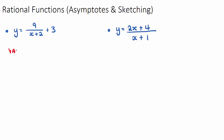To find the vertical asymptote of a rational function, we look at the denominator of the fraction and set it equal to zero. So if we set X plus 2 equal to zero, we get X equals negative 2. The reason is that if X equals negative 2, the denominator becomes zero, giving us 9 divided by 0, which is undefined — so Y is undefined, meaning we have an asymptote there.